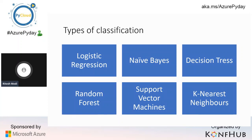There are many classification algorithms. Logistic regression, despite its name, is actually a classifier. Naive Bayes is based on probability and independence. Decision trees are what we'll look at today. More advanced algorithms like random forest, support vector machines, and K-nearest neighbors build on decision trees as a foundation, which is why it's important to understand decision trees — they're intuitive, simpler than others, and foundational to other models.